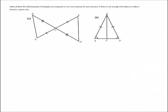Question 2. State whether the following pairs of triangles are congruent or not. Give reasons for your answers. And if there is not enough information to make a decision, explain why. So if we start with number A. To prove congruency, we need three pairs of equal parts between the two triangles.